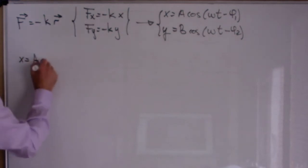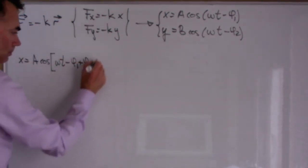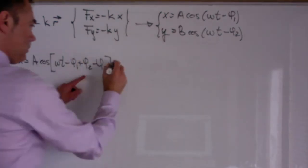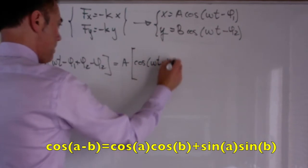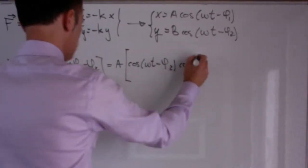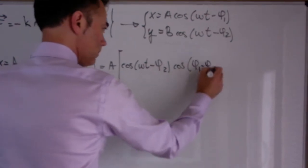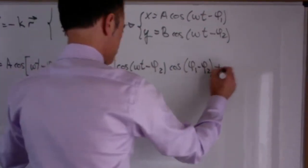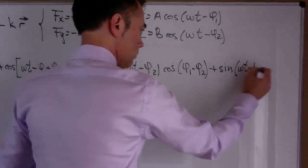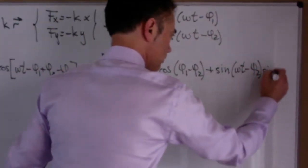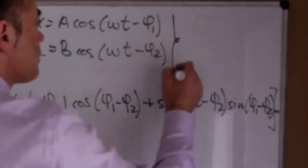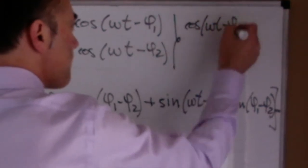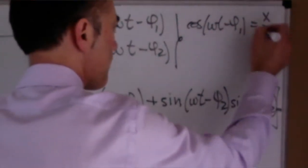We can do some simple math to find the equation of the trajectory. First we add and subtract one phase into the cosine of the other solution. Then we apply a trigonometric identity — cosine of the cosine — then we use the fact that each cosine is the ratio of the position over the amplitude.